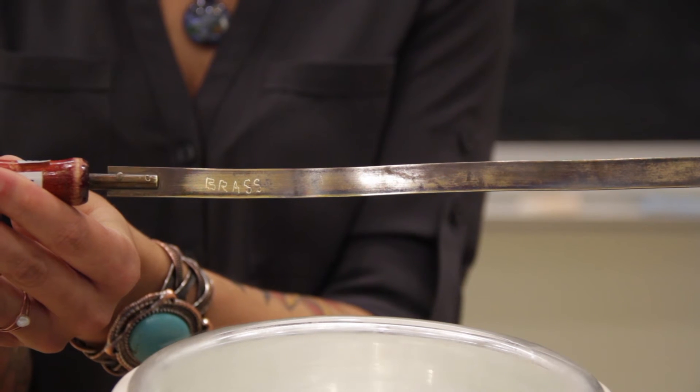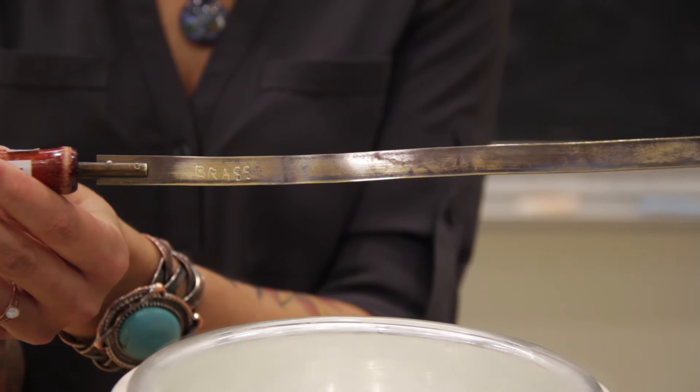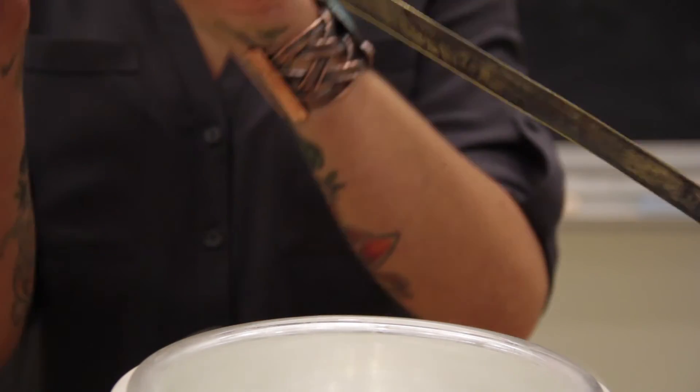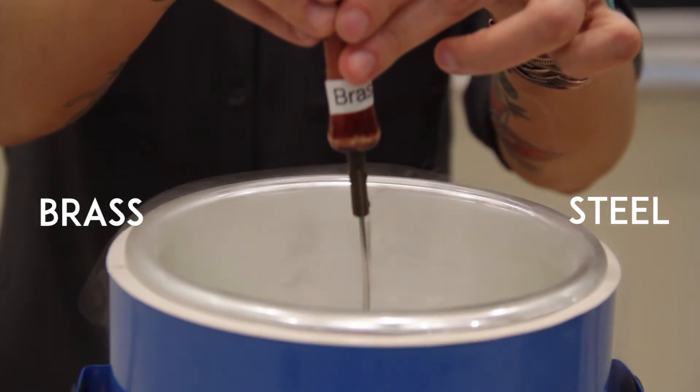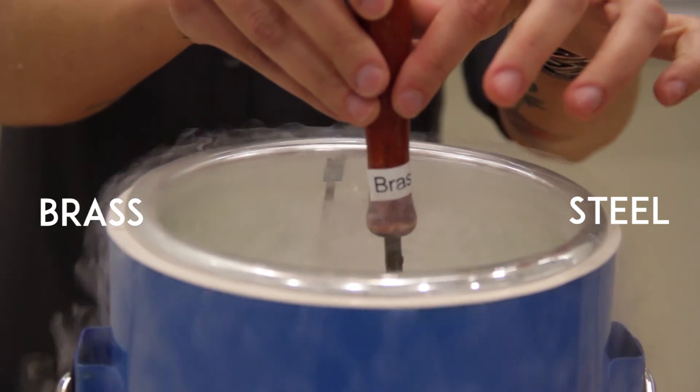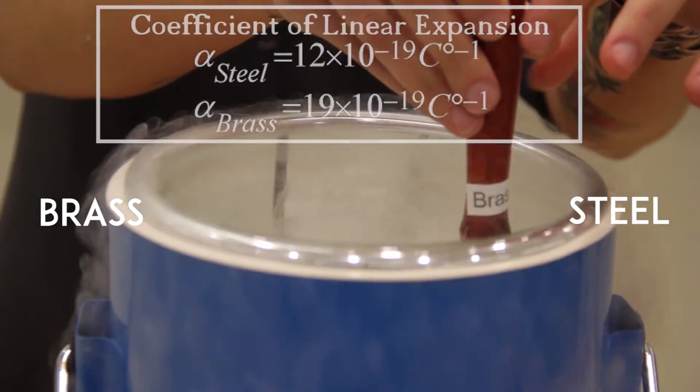Note that when we immerse the bi-metallic strip in the very cold liquid nitrogen, the strip curves toward the left, the brass side. Since brass has the larger coefficient of thermal expansion, it contracts more when placed in the colder temperature.